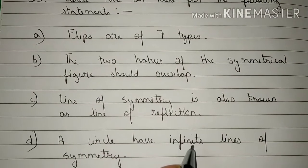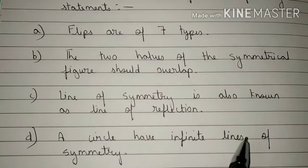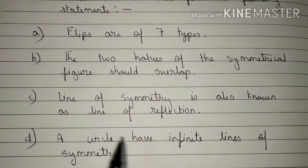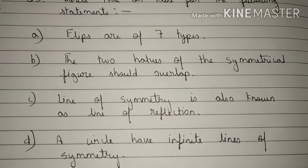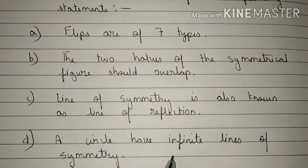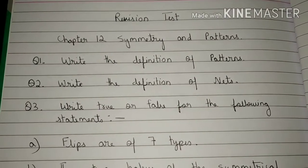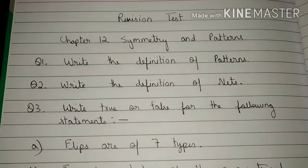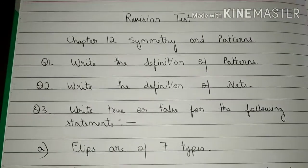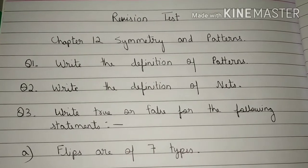Now come to Part D — the statement is: A circle has infinite lines of symmetry. Is this statement true or false? You are going to write your answer here. So students, this is your revision test paper. It is compulsory for you all to attempt all three questions.